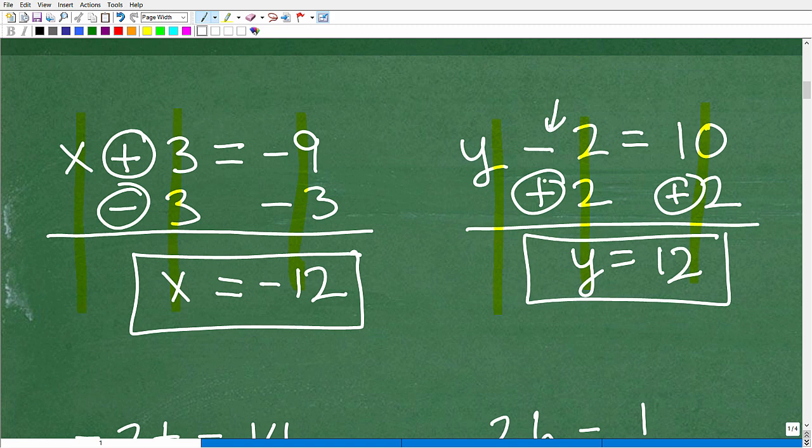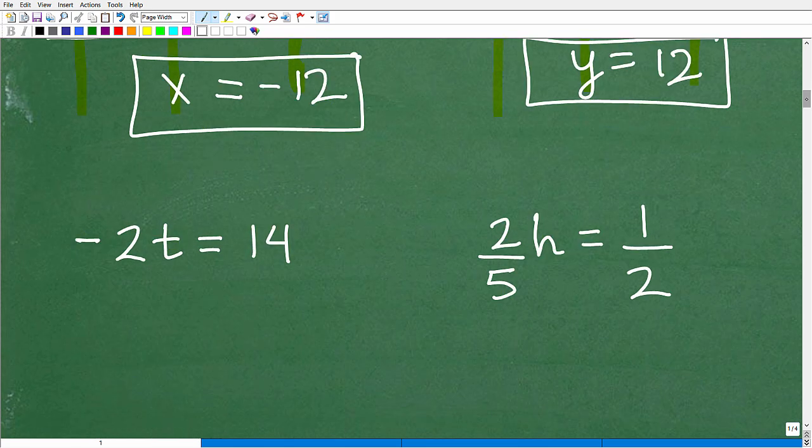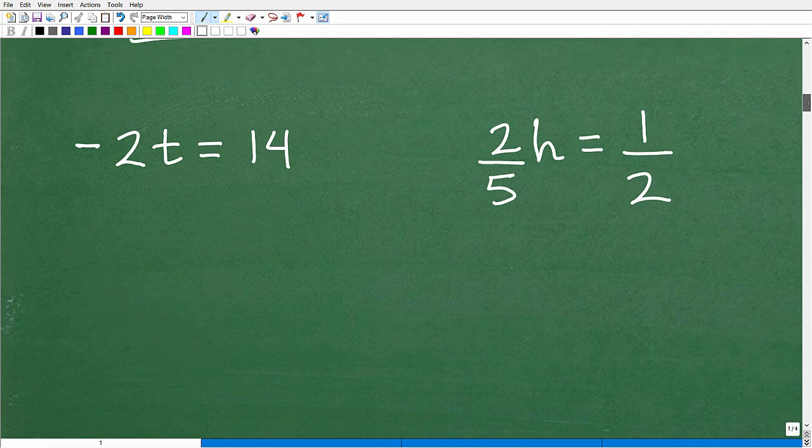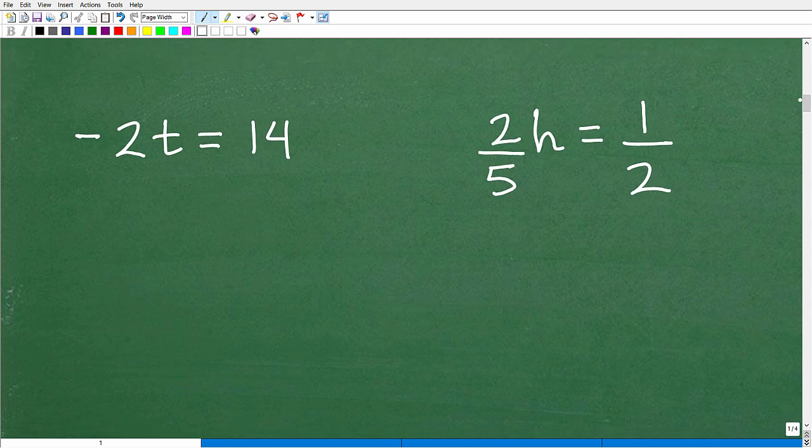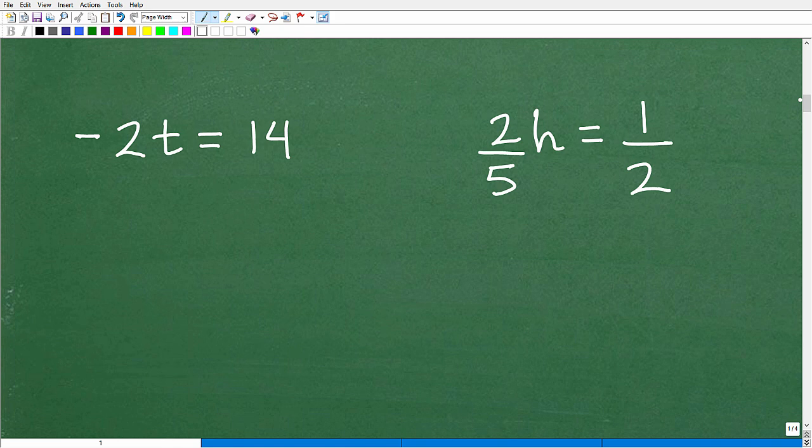And there you go. So what was the one step? The one step was just adding two to both sides of the equation. But notice the pattern here. When I was negative, I had to add. When it was addition, I had to use subtraction. This is the concept of solving equations in algebra called inverse operations.